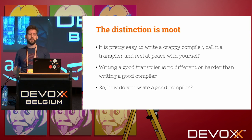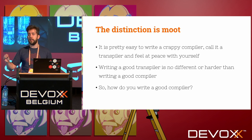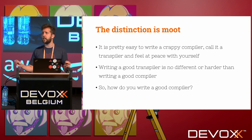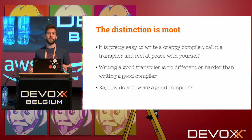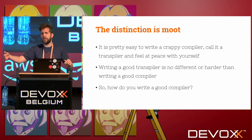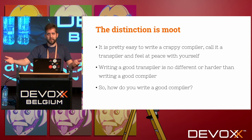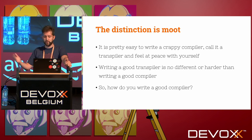Pretty much the point is that this distinction is moot. Writing a good compiler and writing a good transpiler is pretty much the same thing. You cannot say 'it's a transpiler because it's just a crappy compiler' — you should do exactly the same amount of work, and it's not that much.